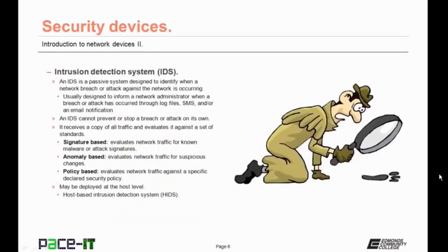Then there is the intrusion detection system, the IDS. An IDS is a passive system designed to identify when a network breach or attack against the network is occurring. They're usually designed to inform a network administrator when a breach or attack has occurred through log files, text messages, and/or email notifications. An IDS cannot prevent or stop a breach or attack on its own. The IDS receives a copy of all traffic and evaluates it against a set of standards — which may be signature-based, evaluating traffic for known malware or attack signatures; anomaly-based, evaluating traffic for suspicious changes; or policy-based, evaluating traffic against a specific declared security policy.